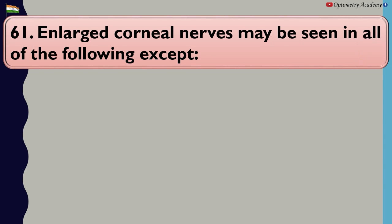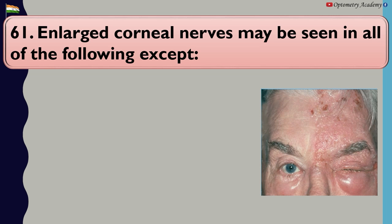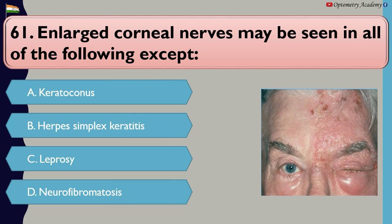Enlarged corneal nerves may be seen in all of the following except: A. Keratoconus, B. Herpes simplex keratitis, C. Leprosy, D. Neurofibromatosis.